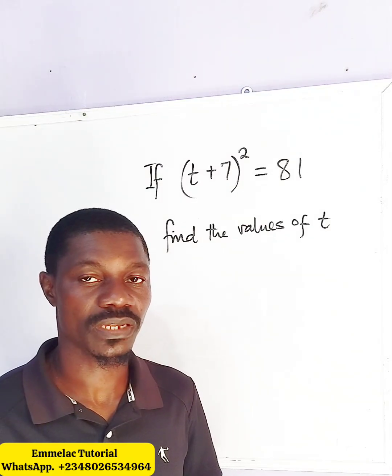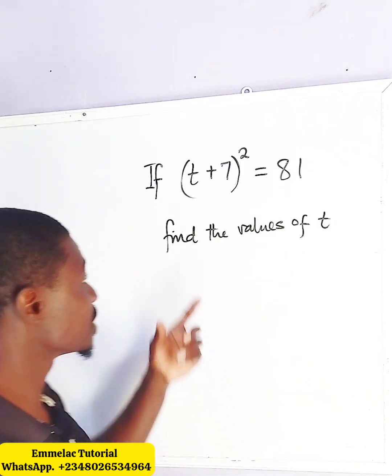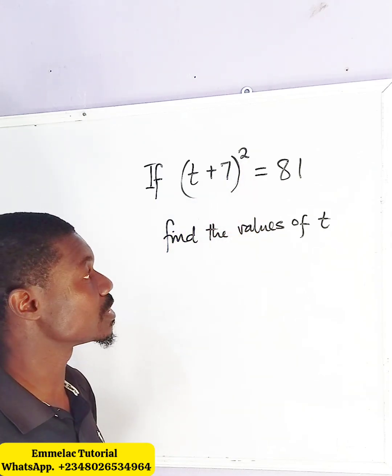In this exponential equation today, we are told to find the value of t if in brackets (t+7) is raised to the power of 2, all equals to 81.